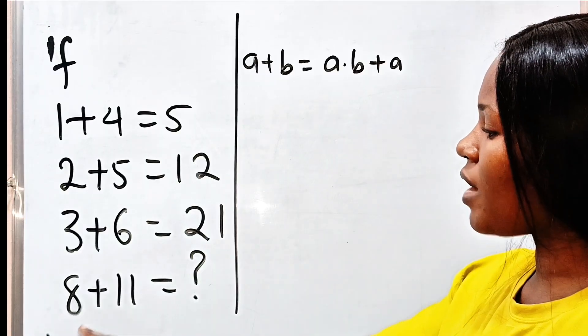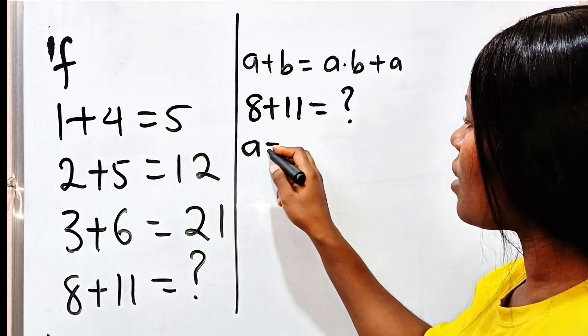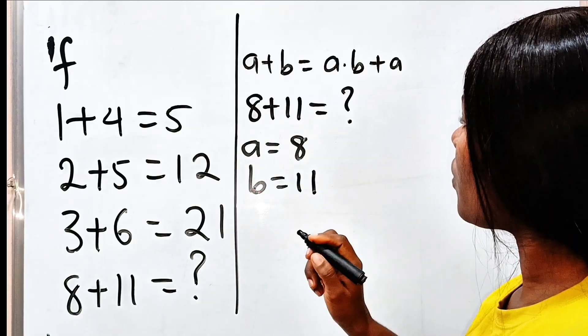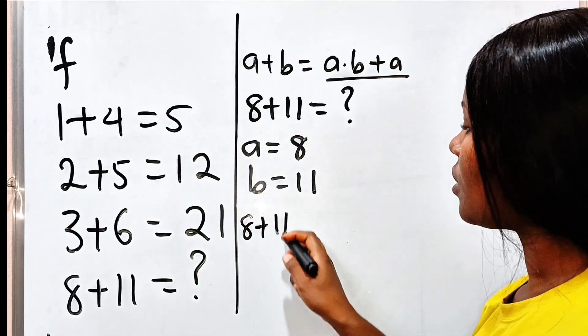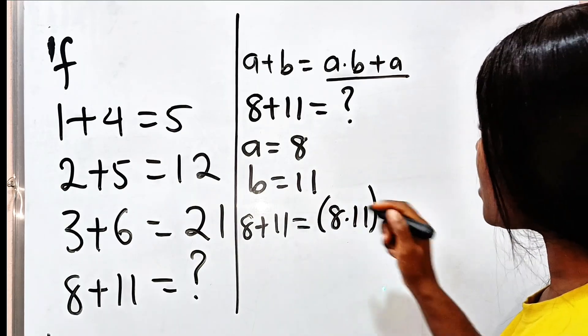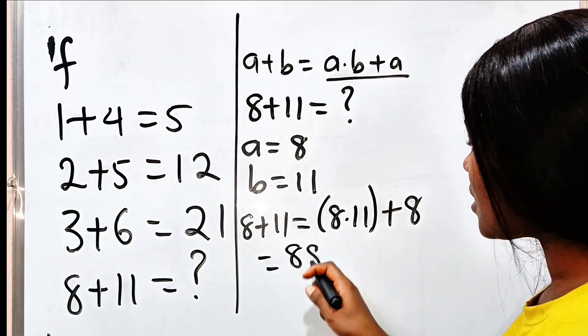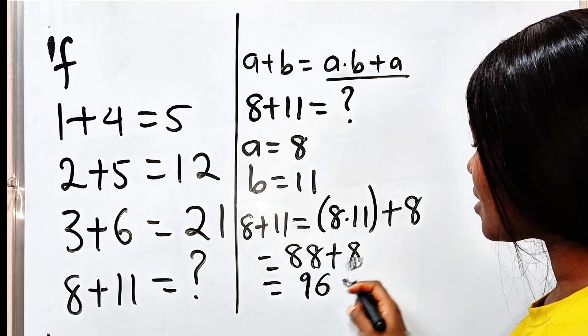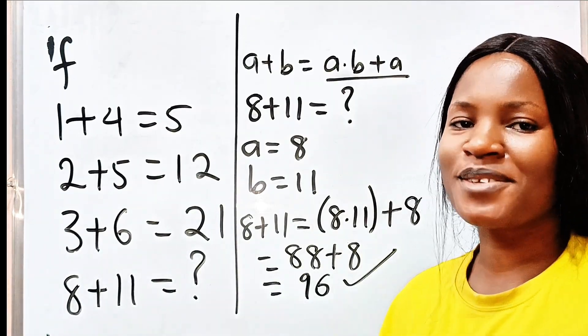All right. So, we have 8 plus 11 is equal to what? Our a is equal to 8, our b is equal to 11. Okay? So, if we should apply this formula, 8 plus 11 will be equal to a times b, that is 8 times 11 plus a, that is plus 8. So, we solve 8 times 11 is 88, plus 8. 8 plus 8 is 16, write this carry 1, add it here, you have 96. And this is the correct answer. So, if you've got this, thumbs up, you did it all.